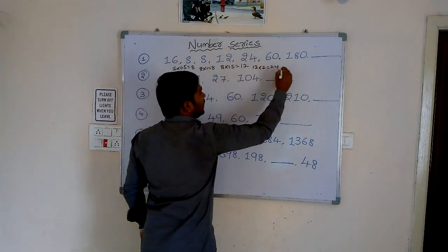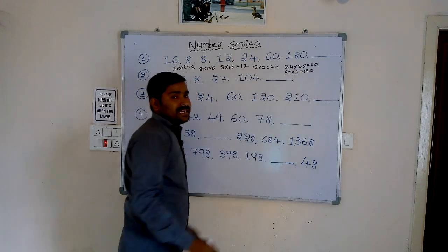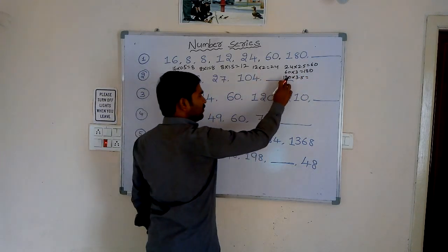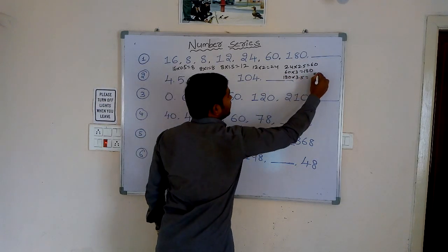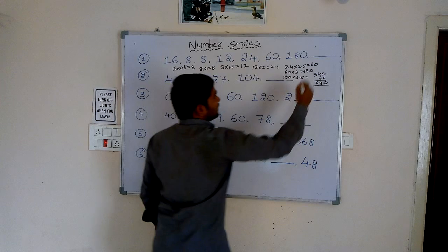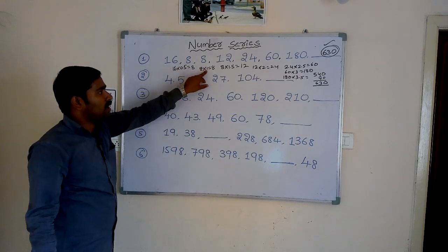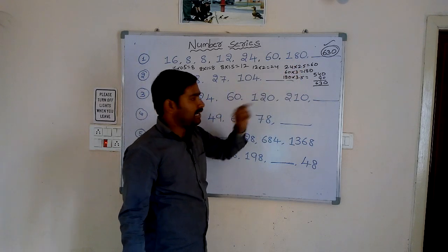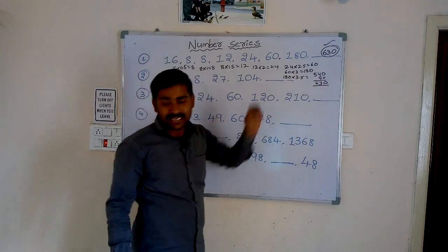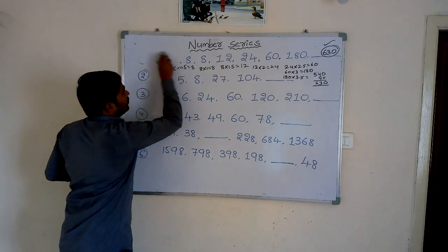Continuing the pattern: 24 × 2.5 = 60. Next, 60 × 3 = 180. Then 180 × 3.5 = 630. So the full multiplier sequence is 0.5, 1, 1.5, 2, 2.5, 3, 3.5. Verification: 540 + 90 = 630. So 630 is the perfect answer. First question completed.